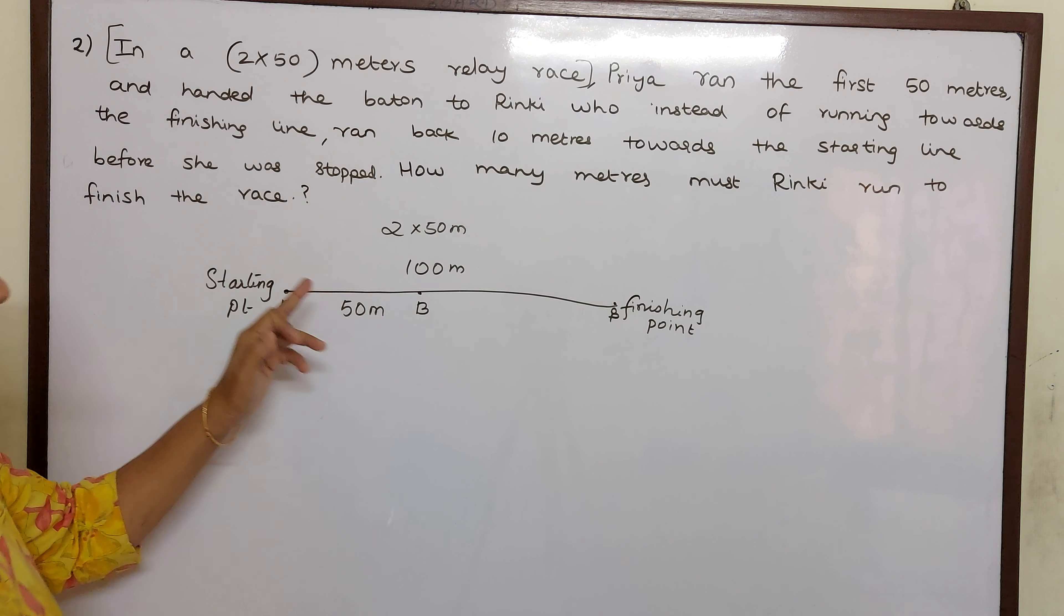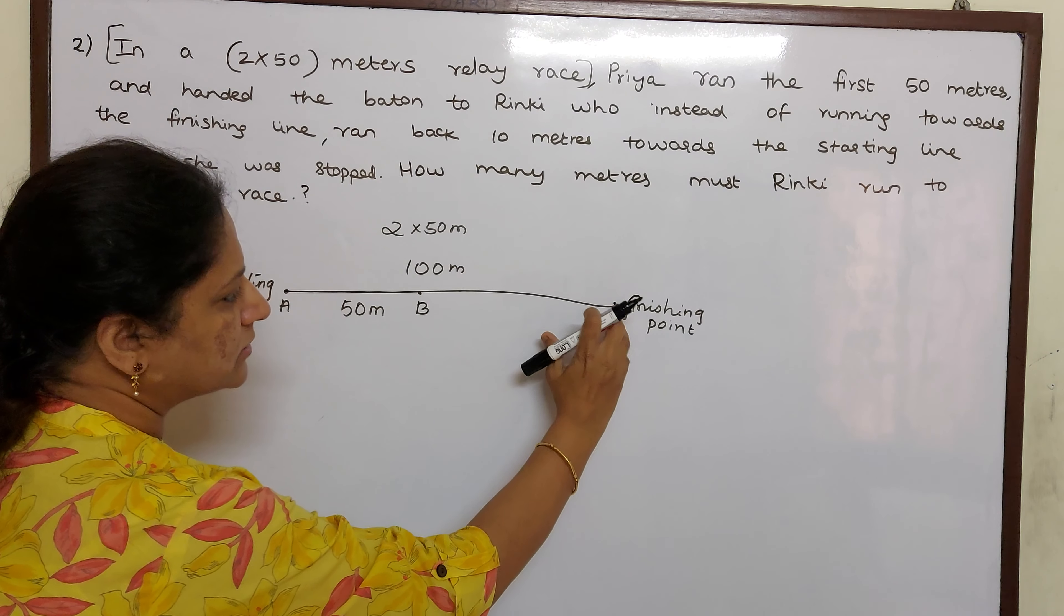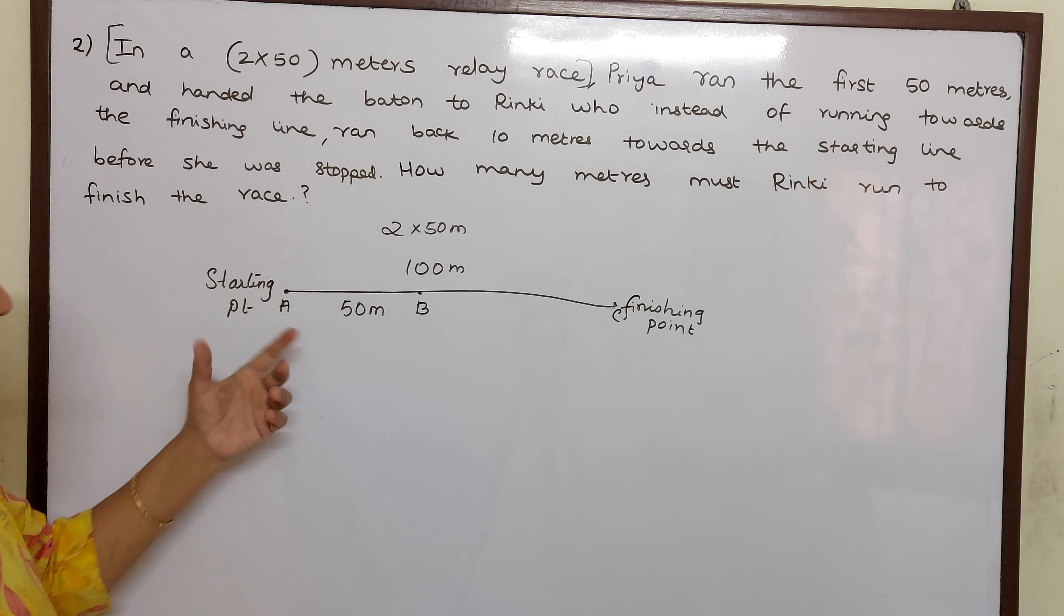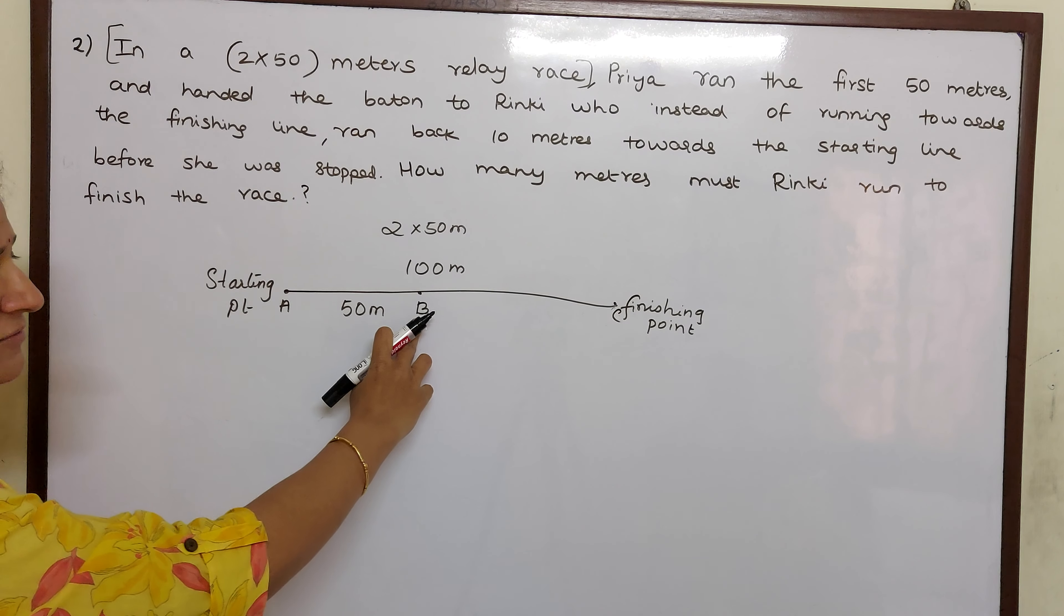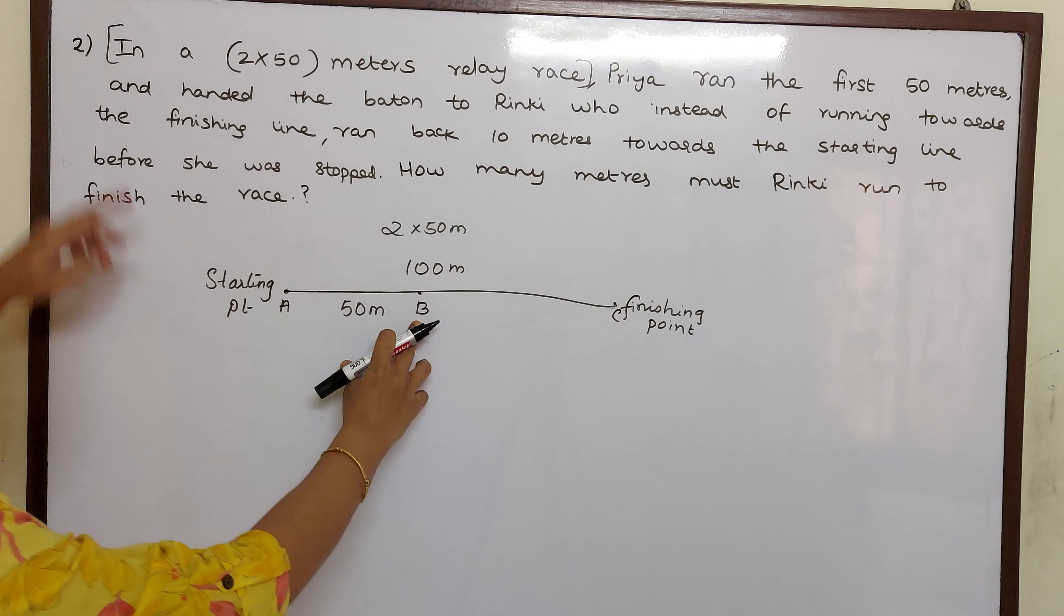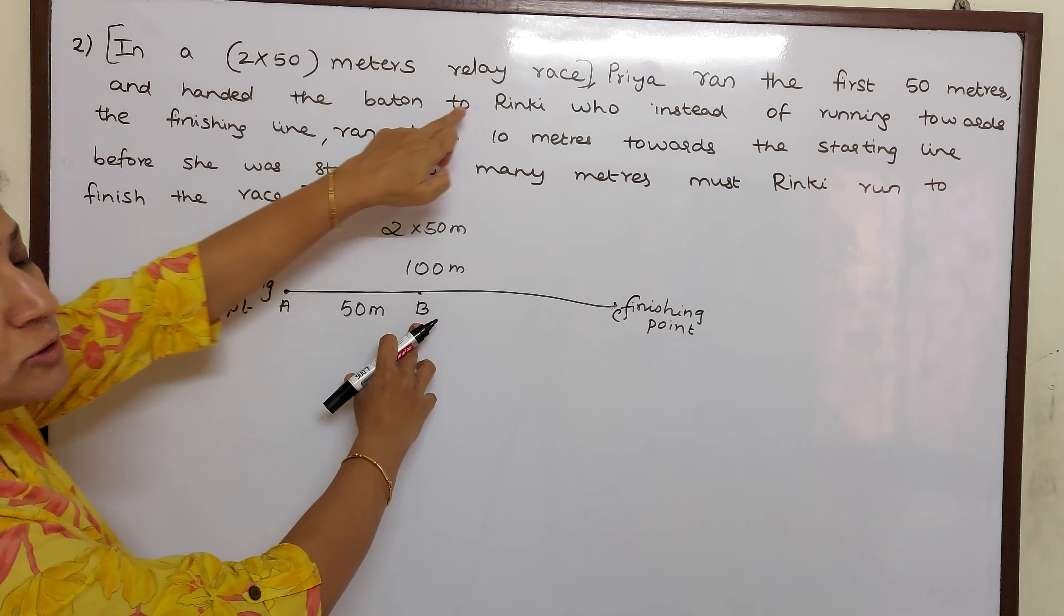That means children from A to B, if I take, sorry, this is C. So if I take A to B as 50 meter, Priya has started from here and she has finished running 50 meter and hands the baton to Rinky.